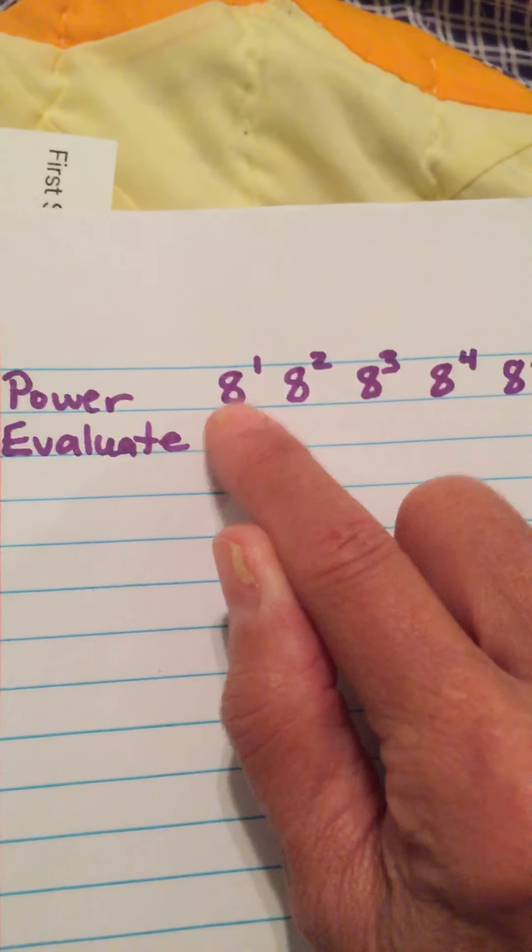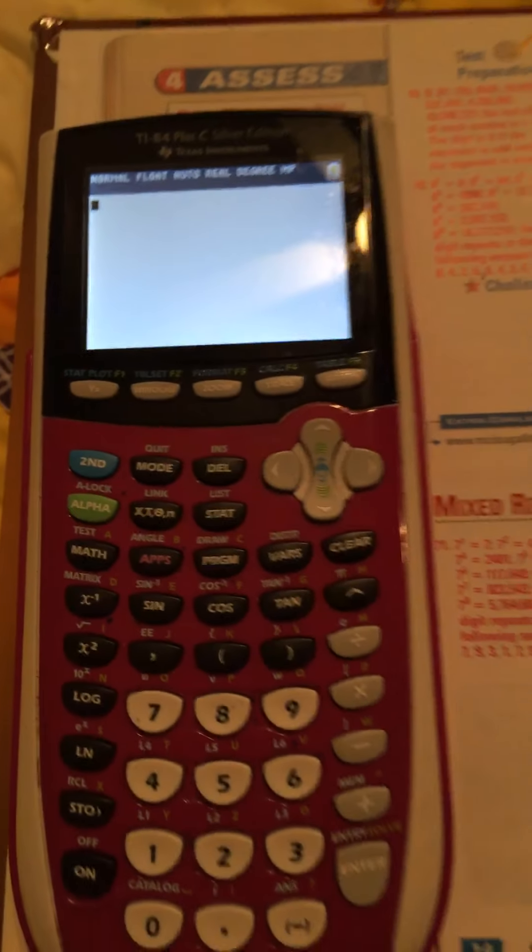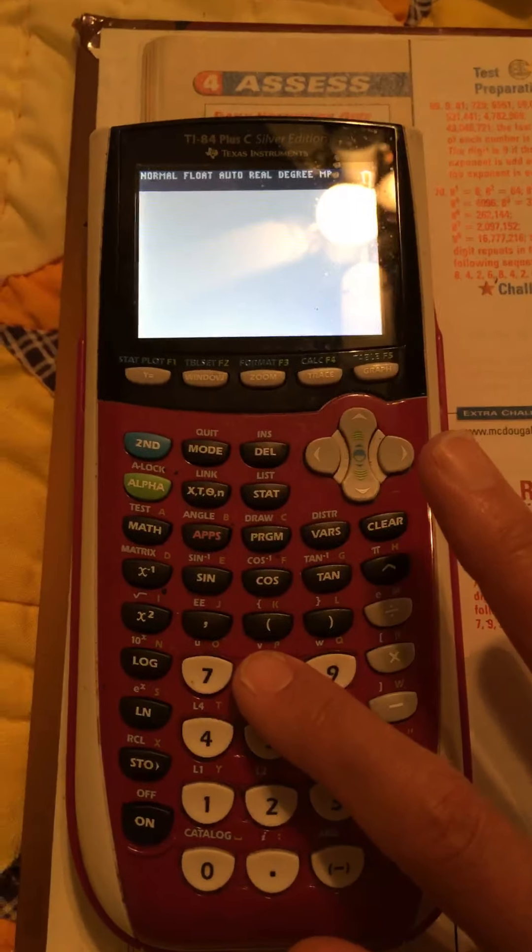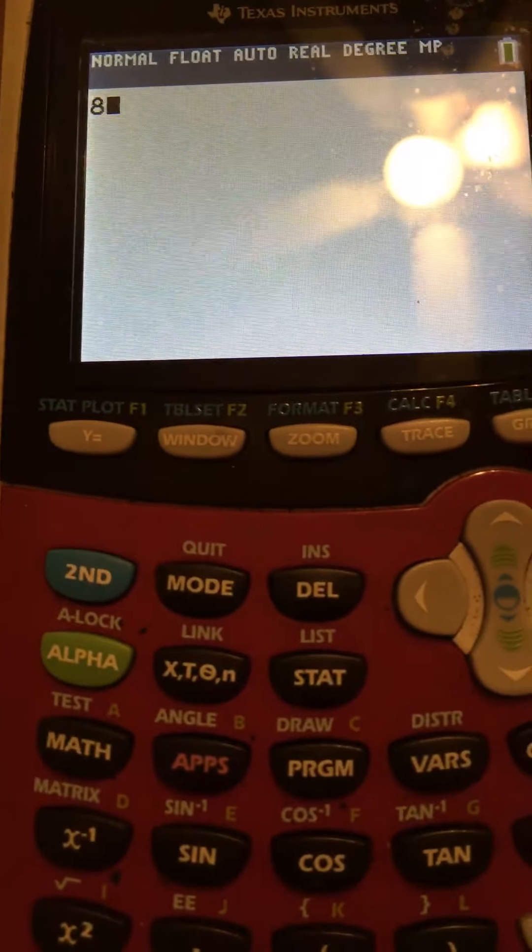So I've got it over here. So I'm gonna do 8 to the first power, 8 to the second, 8 to the third, and I'm gonna find out what it is using my calculator. Okay? So how you do an exponent, you just push the base, the number that's gonna be raised to an exponent, and mine is 8.